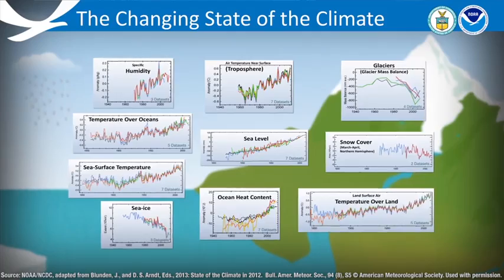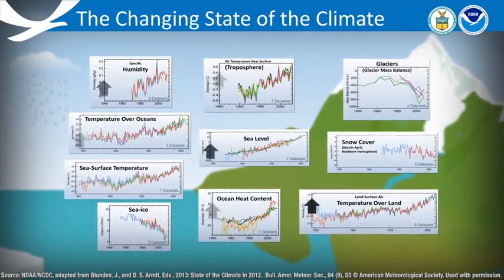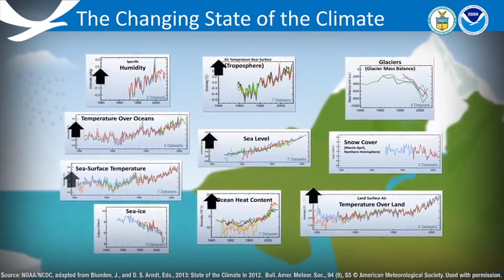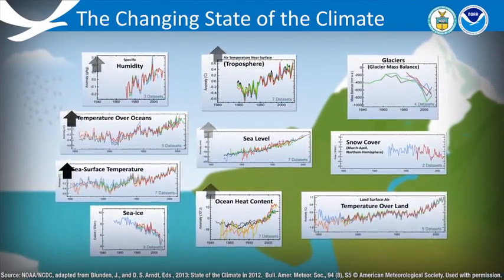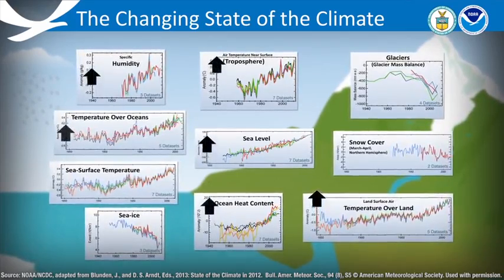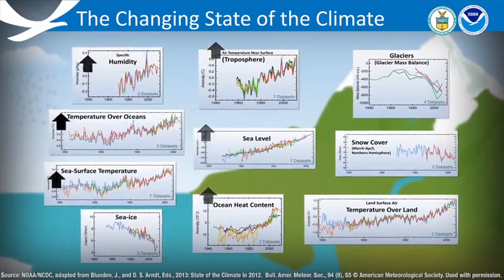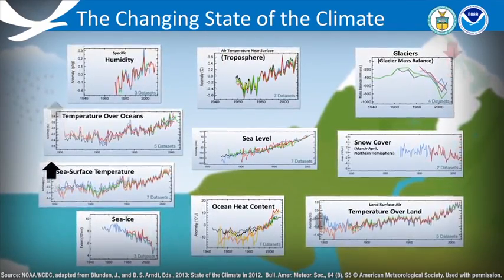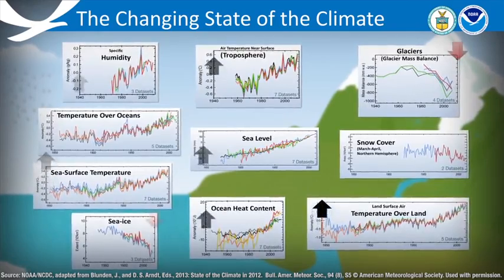A number of thermal or temperature indicators are on this slide. And what we see, and you can see this by the arrows, is that all those thermal indicators are going up over time, particularly over the last several decades. And the sea ice and snow cover indicators are going down, as you'd expect, as the temperature increases.